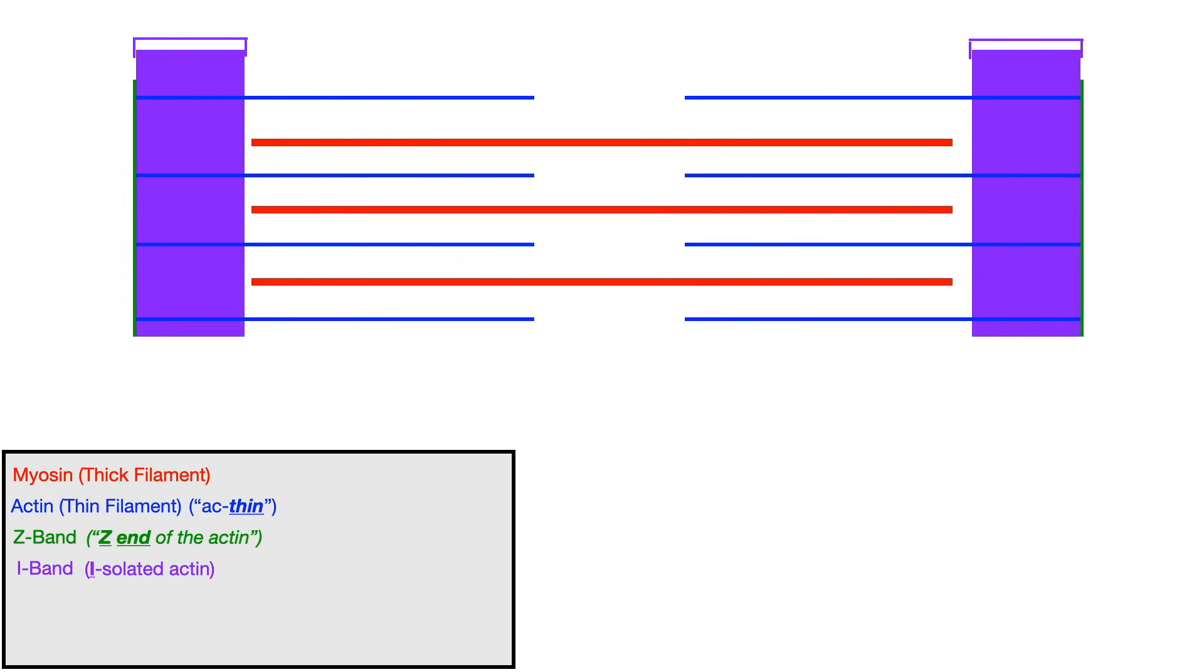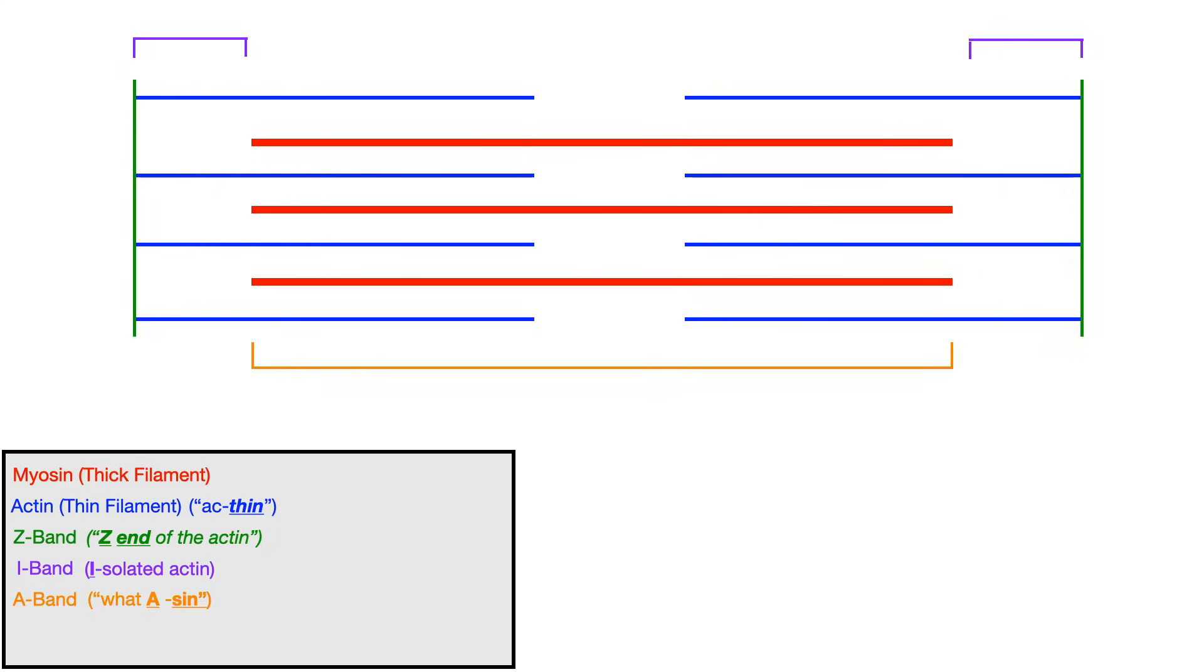So the next area that we need to know on the sarcomere is the A band. The A band is the entire length that the myosin runs. So you can see that it's shown in orange here. So it's basically the entire length of the sarcomere that the myosin runs. And so technically, it's the length of the myosin, but it has a length that captures some myosin and some actin. But lengthwise, it's from myosin left to myosin right, or maybe right to left, depending on which direction you're looking. And the way that I want you to remember this is that when you think of A, I want you to think what a sin. There's an expression that people say, what a sin. And the reason that you say that is because what a sin reminds you of A band and sin for myosin. So the A band is the entire length of myosin. So what a for A band, sin for myosin, A band runs the whole myosin length.